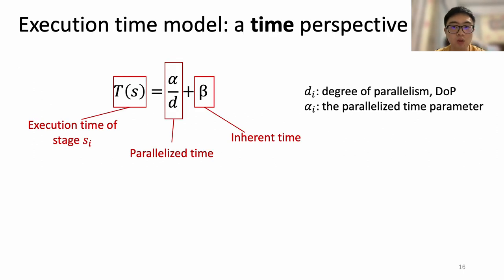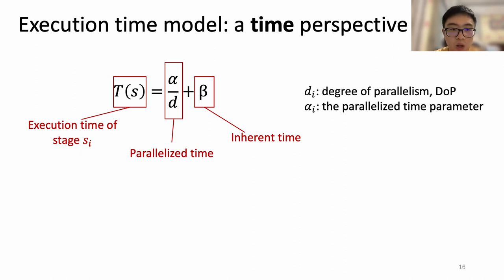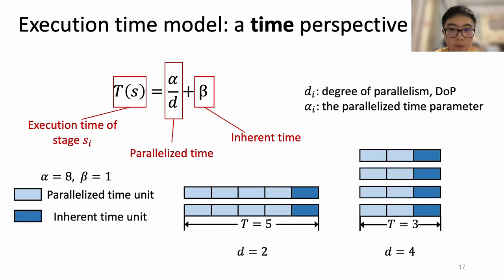We observe that the execution time of a data analytics stage is typically nearly inversely proportional to the degree of parallelism. So we model the execution time as the sum of the parallelized time and the inherent time. The former represents the major overhead for processing partitioned big data and decreases as DOP increases, while the latter stands for constant overhead such as function initialization. For example, if alpha is 8 time units and beta is 1 time unit, when DOP is 2, execution time equals 5 time units; when DOP is 4, execution time is 3.